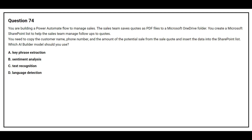And insert the data into the SharePoint list. Which AI Builder model should you use? Option A: key phrase extraction. Option B: sentiment analysis. Option C: text recognition. Option D: language detection. The correct answer is option C, text recognition.